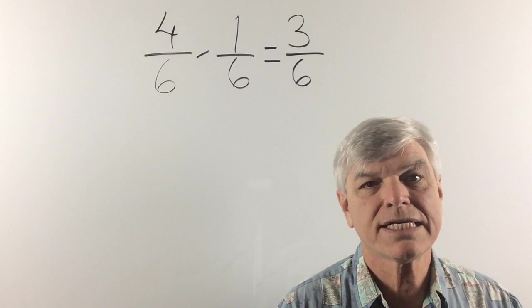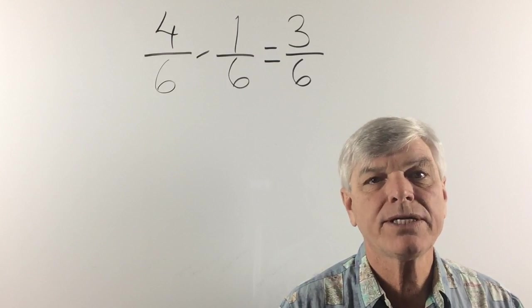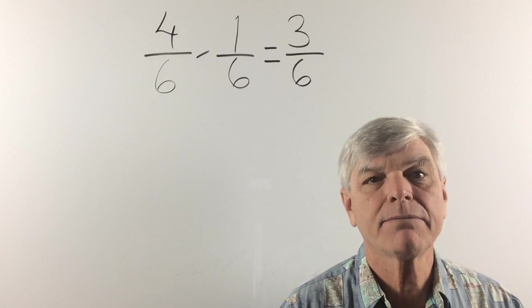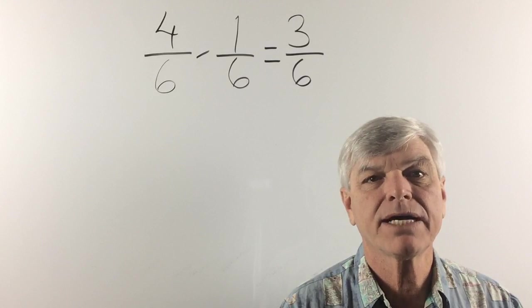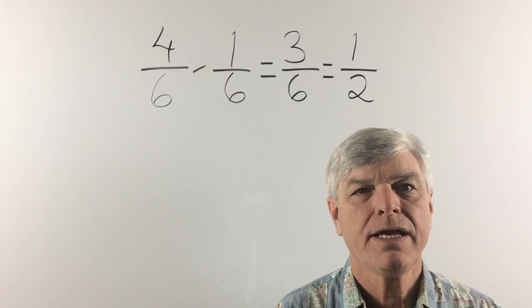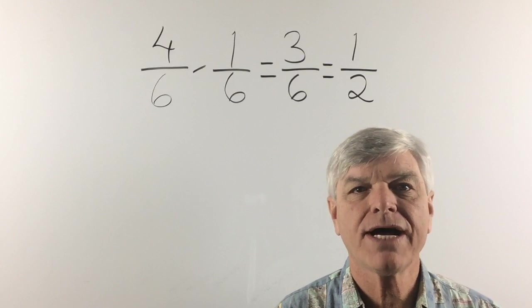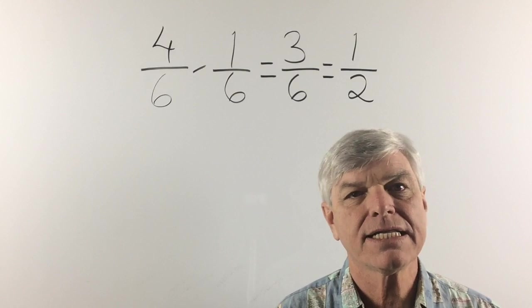And we have 3 sixths which can be reduced. Let's see. 3 can be divided by 3 and 6 can be divided by 3. And we have one half which is our final answer. And that is the end of this lesson.